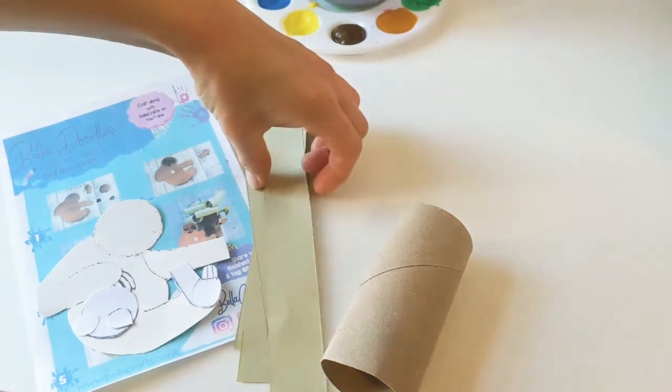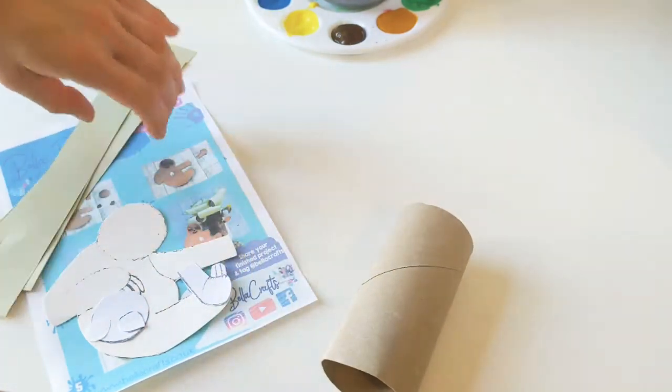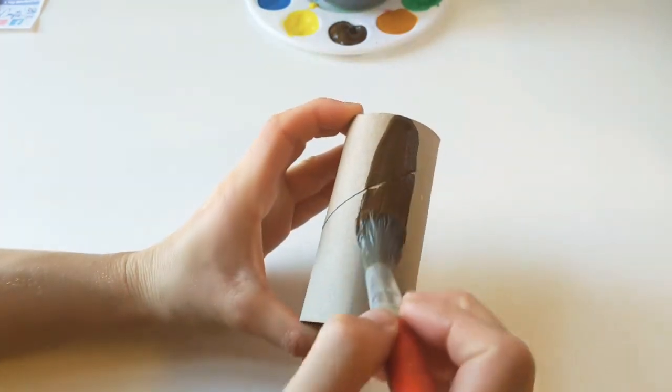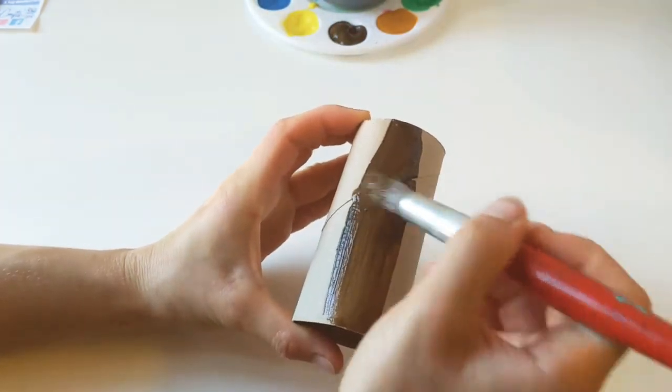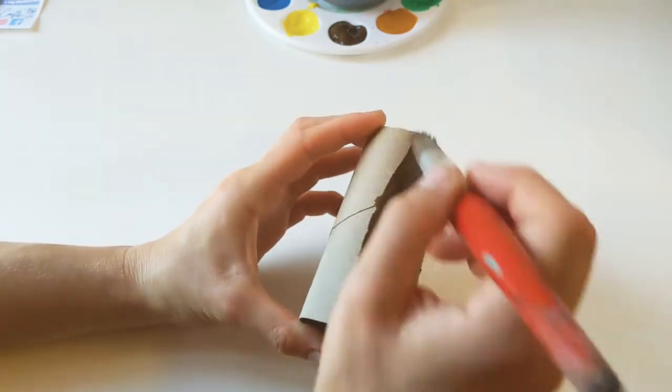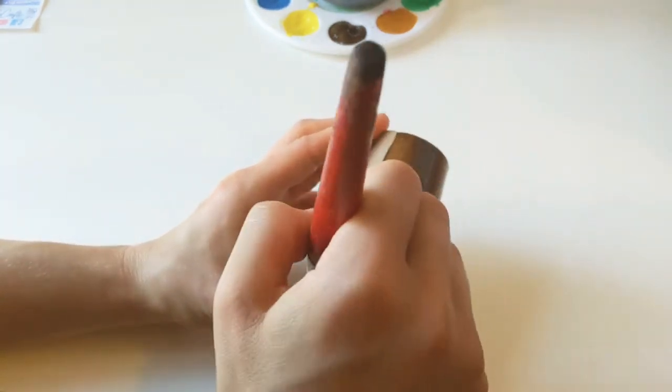We're going to start off just by painting our little tree. So I'm just going to move those bits out of the way and we're going to use our brown paint to paint our tree. So we're just going to paint it all over and this one can be a bit tricky to hold so you might need somebody to help you hold this one.